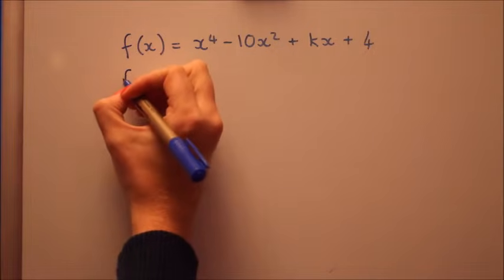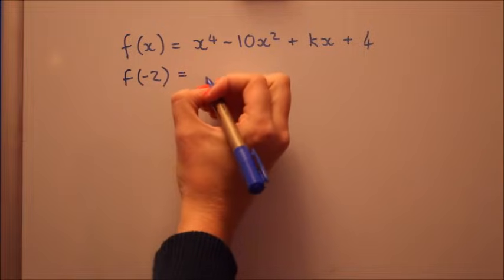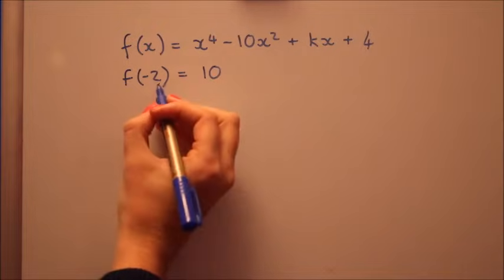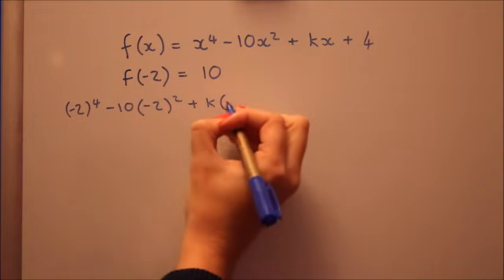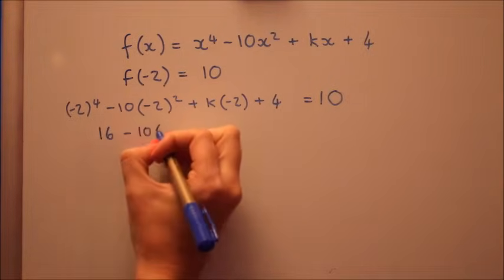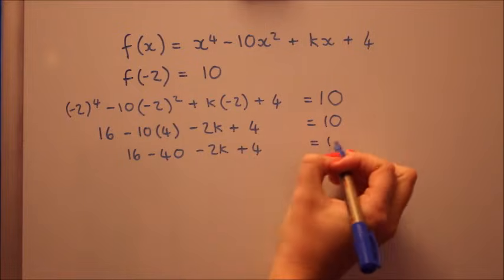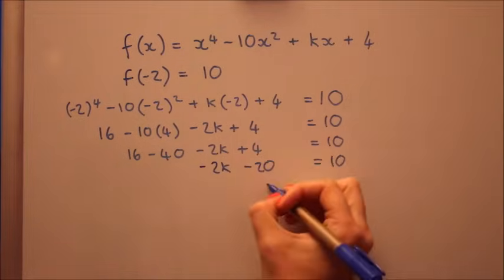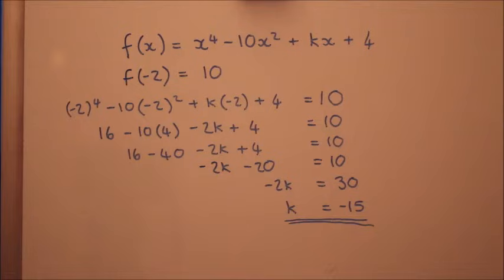We're dividing by x plus 2, so we're going to put in minus 2. And we know the remainder, so what we get there is actually 10. Let's put minus 2 into that polynomial then. Well done. I don't know if you've got that one right. That one is a little bit more like when you're getting an exam. So do you remember how we did that? Now let's look at the factor theorem.